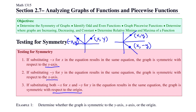Finally, with respect to the origin, if we have a point x comma y in the first quadrant, we need to have both the opposite x and the opposite y — negative x comma negative y. It's essentially a reflection across the y-axis and then the x-axis as well.